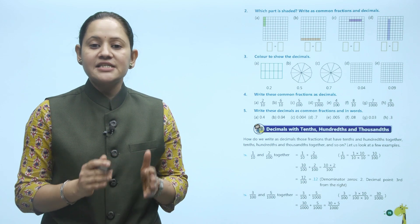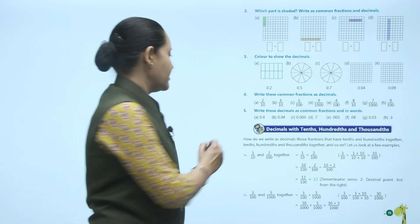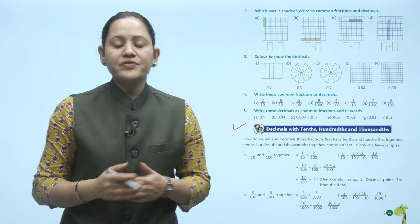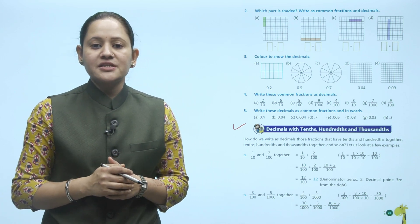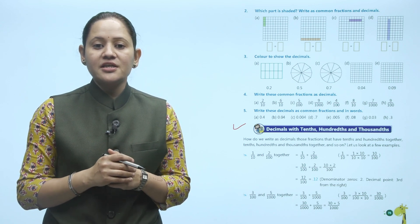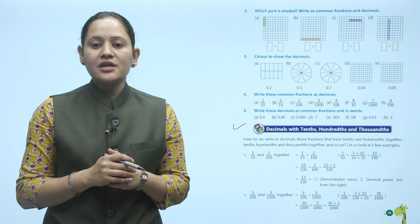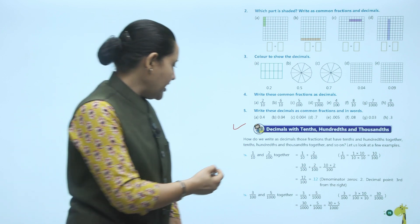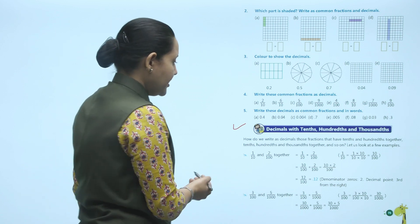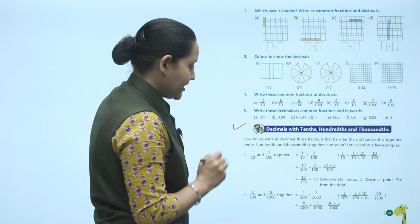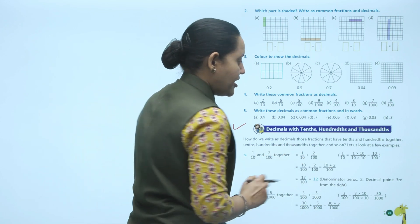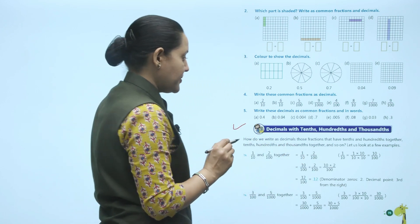Next is decimals with tens, hundreds, and thousands together. How do we write a decimal for fractions that have tenths, hundredths, and thousandths combined? Let's look at a few examples. Example: 1 upon 10 and 2 upon 100 together. We need to add them. The denominators are not the same, so we find the LCM.